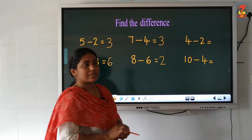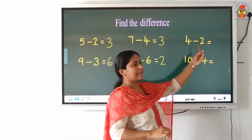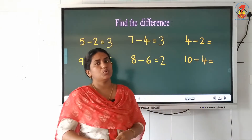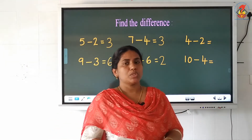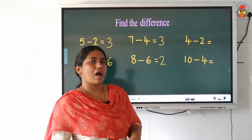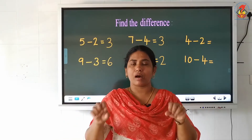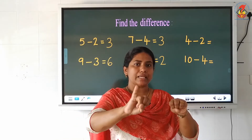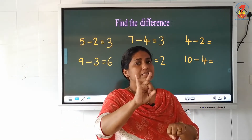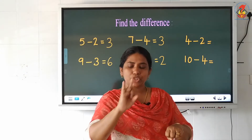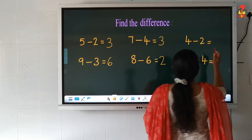Now look at the next question children: 4 minus 2. Which is the small number? 2. So we will start counting after 2. So 2 is our answer.